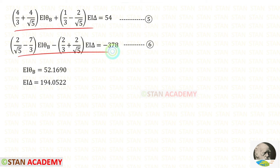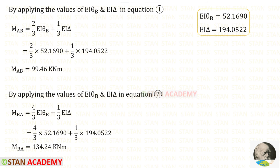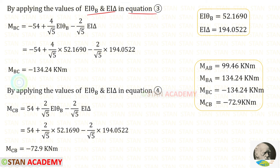Now we have two equations. We can use a calculator to solve them. Using the calculator, we get the values of EI·theta_B and EI·delta. Substituting these into equations 1 through 4, we find M_AB, M_BA, M_BC, and M_CB respectively.